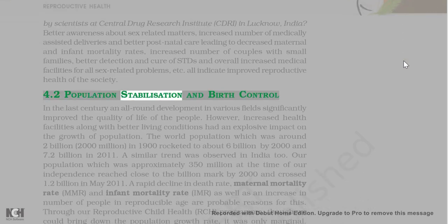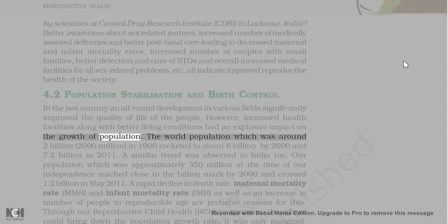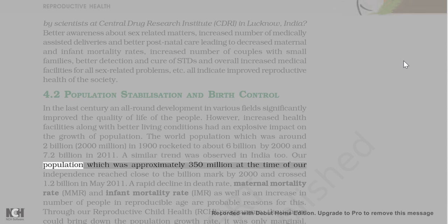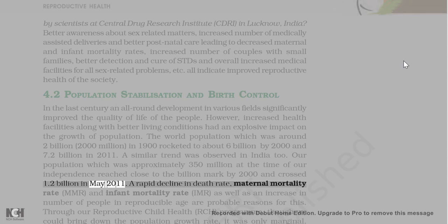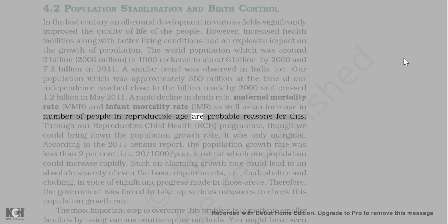In the last century, all-round development significantly improved the quality of life of people. However, increased health facilities along with better living conditions had an explosive impact on population growth. World population, which was around 2 billion in 1900, rocketed to about 6 billion by 2007 and 7 billion in 2011. India's population, approximately 350 million at independence, reached close to 1 billion by 2000 and crossed 1.2 billion in May 2011. A rapid decline in death rate, maternal mortality rate (MMR), and infant mortality rate (IMR), as well as an increase in the number of people in the reproductive age, are probable reasons for this.